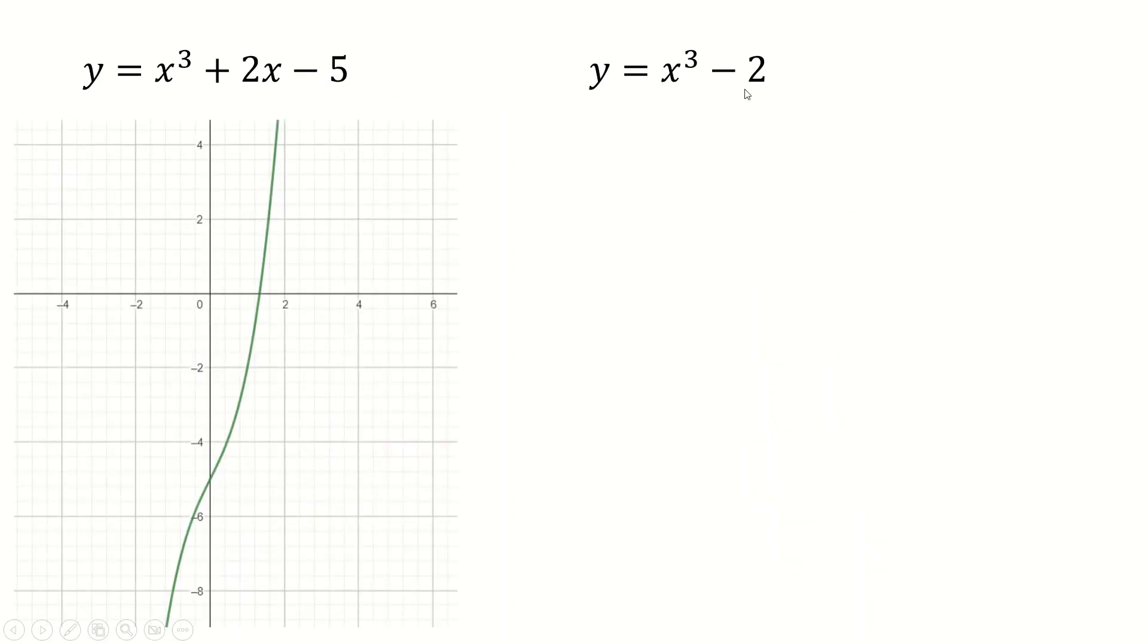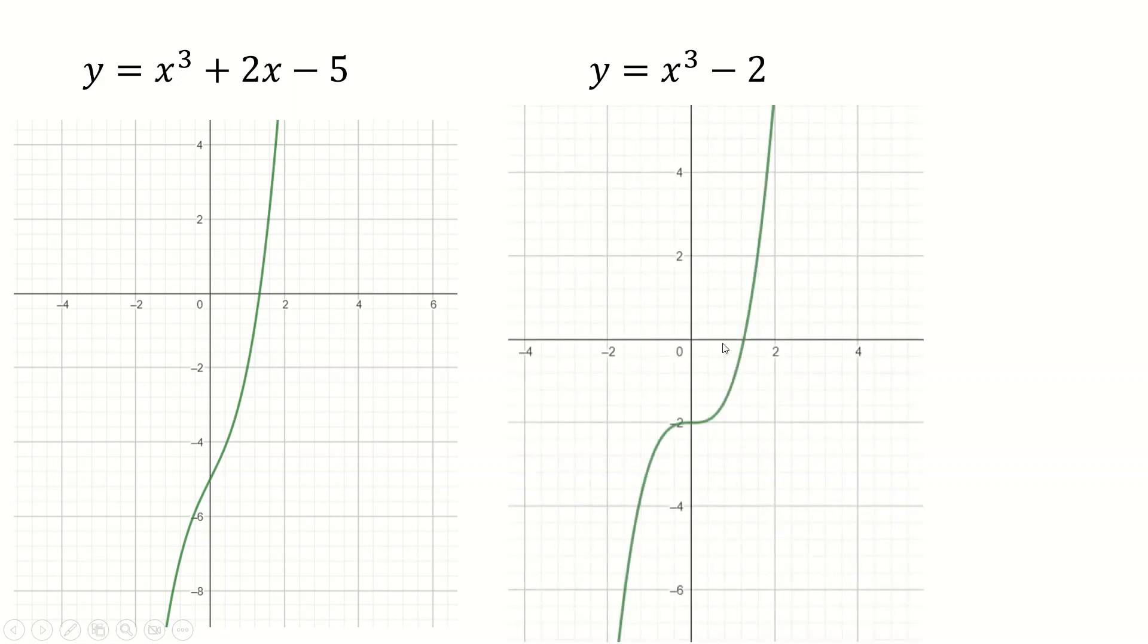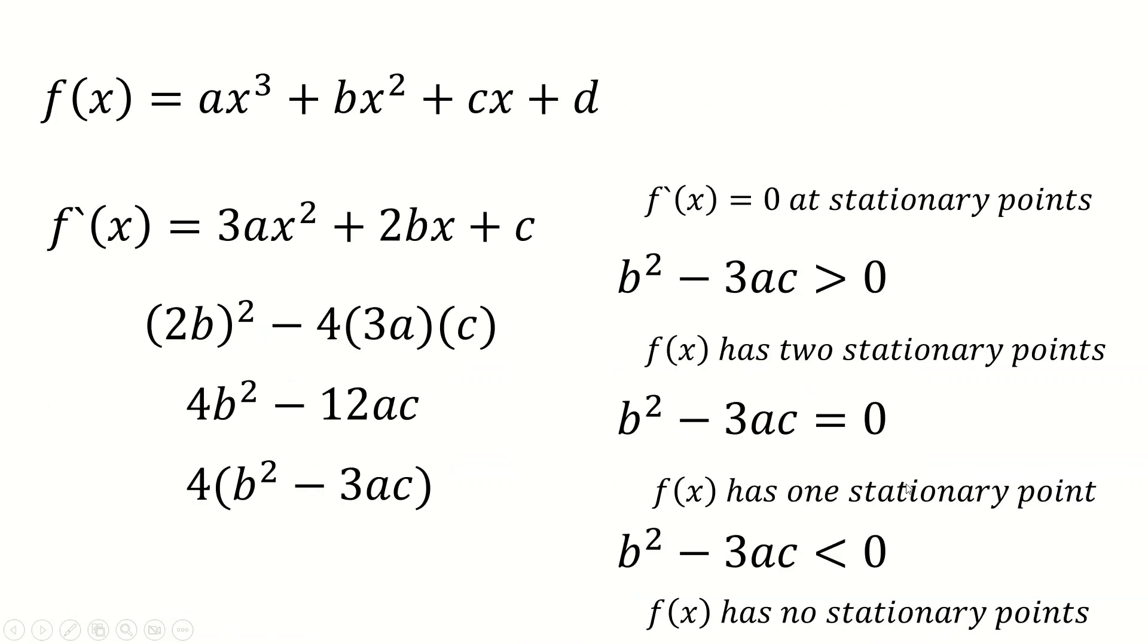And likewise, this one, probably you know this one, but b squared minus 3ac, it's just going to be minus, so b is zero, and then this is going to be minus three times a times c, but c is zero as well. So it's just going to be zero, of course, the b and the c are zero. And so it's going to have one stationary point, as this rule here predicted.